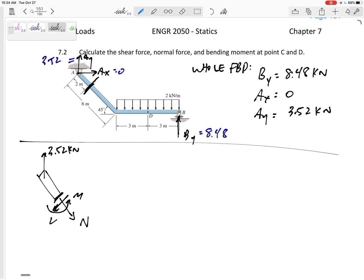And then what do I have acting on it? I have this 3.52 kilonewtons right there. So now I'm ready to sum the force in X equals 0, sum of the force in Y equals 0, sum of the moments equals 0. This dimension, this is only 2 meters from there to there.